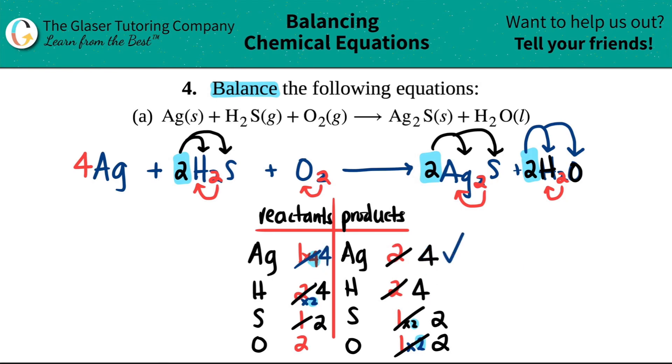Four and four, that's balanced. Two and two, that's balanced. And then two and two, we are all balanced. This is your new balanced equation. You have four silvers plus two H₂S plus one O₂ yields two Ag₂S and then two H₂Os. And that's your final answer.